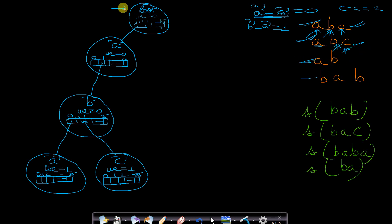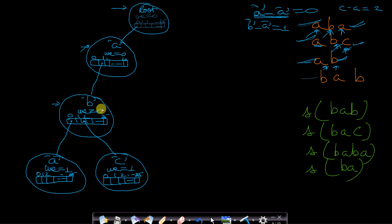Now let's insert 'ab'. Starting from root, 'a' is already present so we go to 'a'. 'b' is already inserted so we go to 'b'. The string has ended here — we don't even need a new node. To record that 'ab' exists, we increase the word_end count at node 'b' to 1. This says there is one string ending at 'b' starting from root, which is 'ab'.